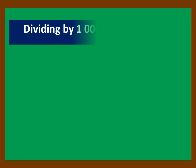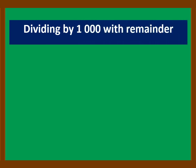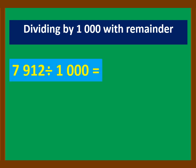Let's proceed to dividing by 1,000 with remainder. Let's answer the examples: 7,912 divided by 1,000 — the last three digits of the number are the remainder, and the remaining number is the quotient.